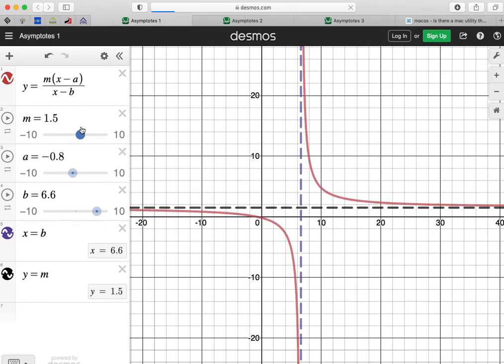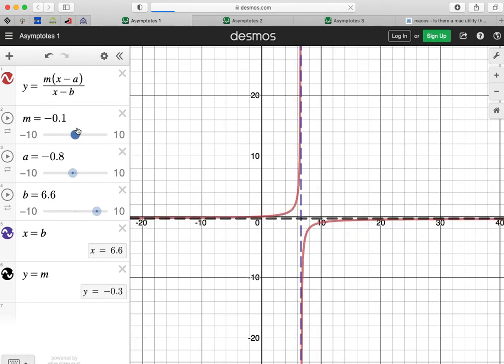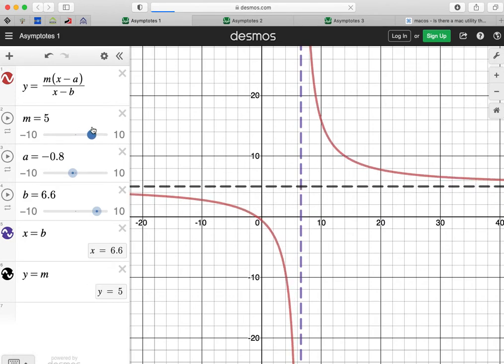Do you notice that depending on some values, the whole graph flips around, which is quite interesting. And we'll talk about that at another point as well. So there are things that determine an asymptote and things that don't.